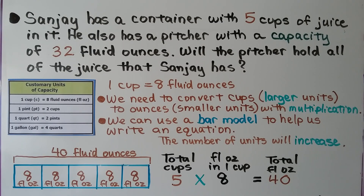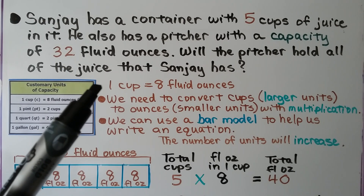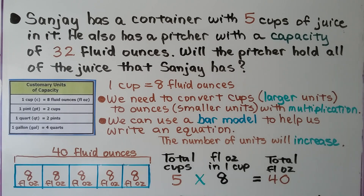Sanjay has a container with five cups of juice. He also has a pitcher with a capacity of 32 fluid ounces. Will the pitcher hold all of the juice? According to our table, one cup equals eight fluid ounces. We need to convert cups — the larger unit — to ounces, the smaller unit, using multiplication.